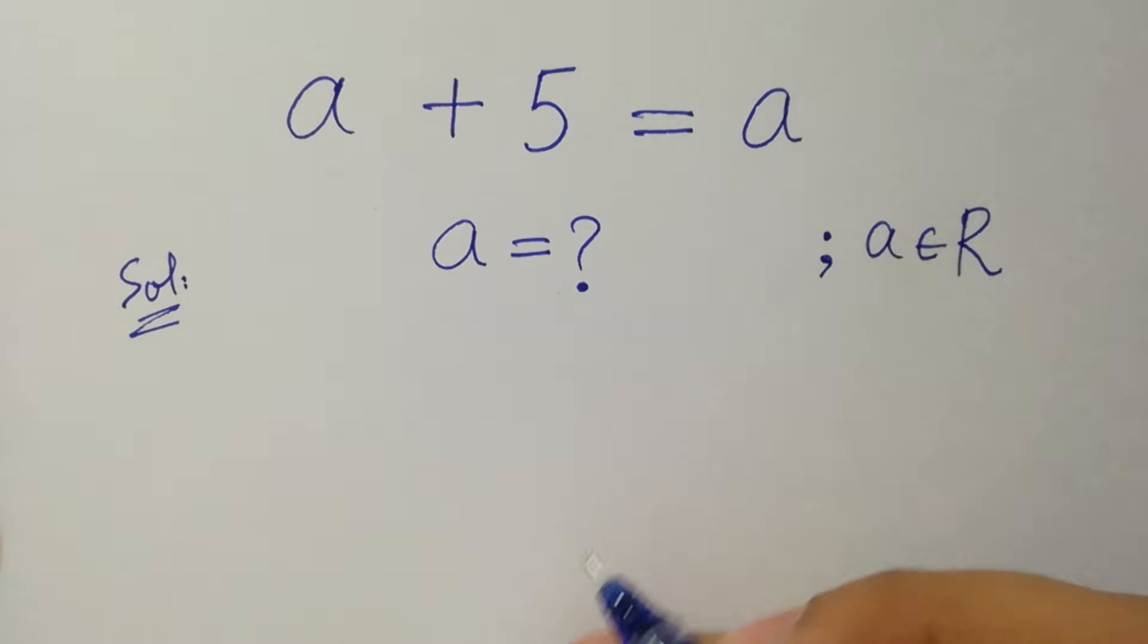If you solve this problem, a plus 5 equal to a, then 5 equal to a minus a. 5 equal to a minus a is 0. 5 does not equal to 0, which is not possible. It means we can't solve this problem this method.